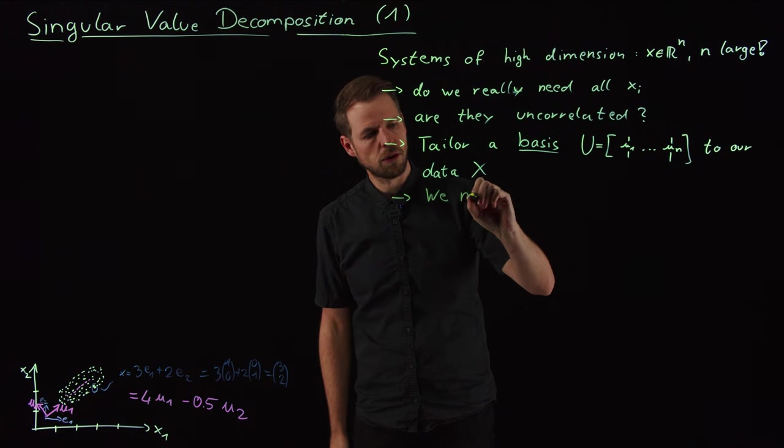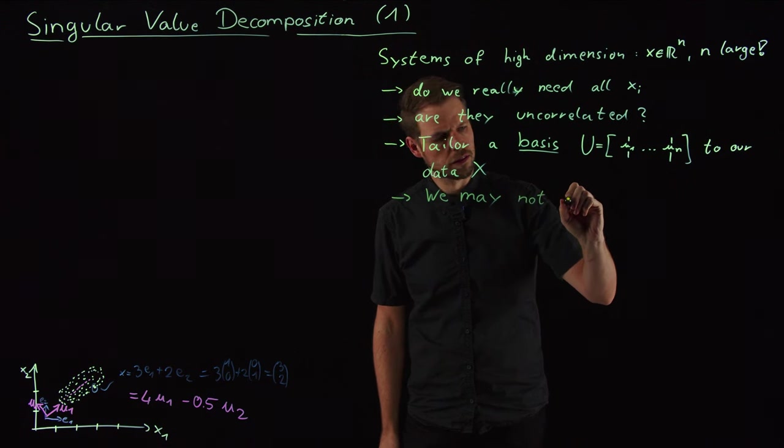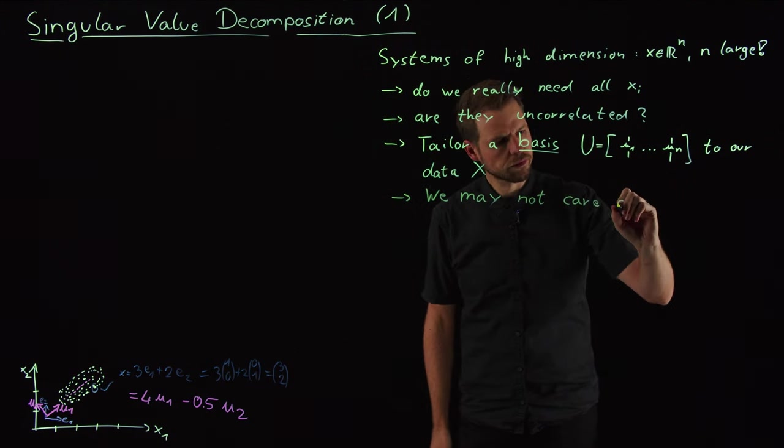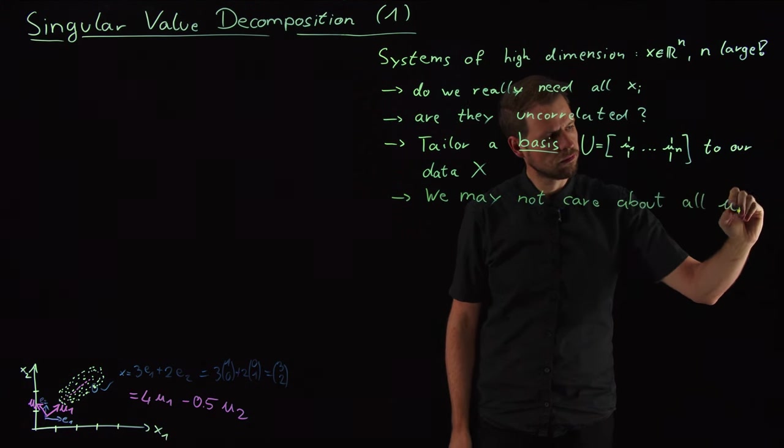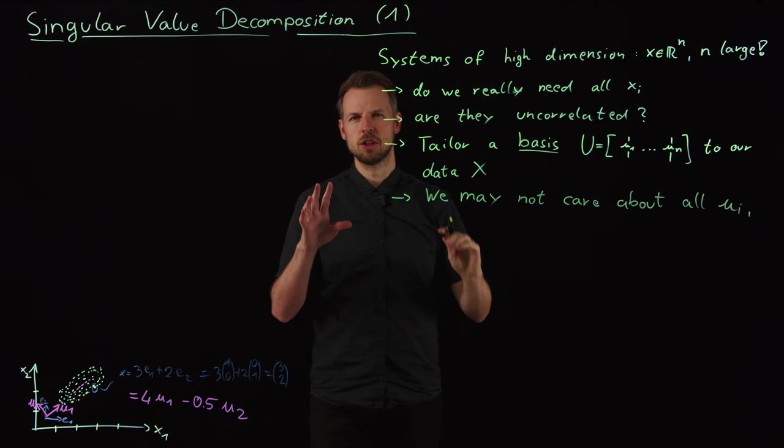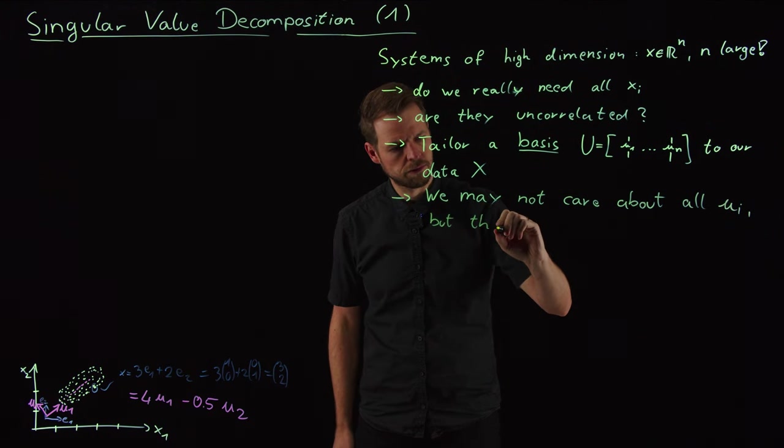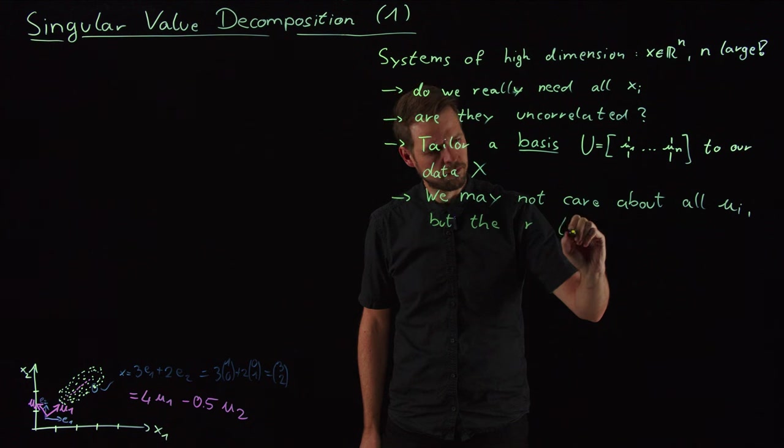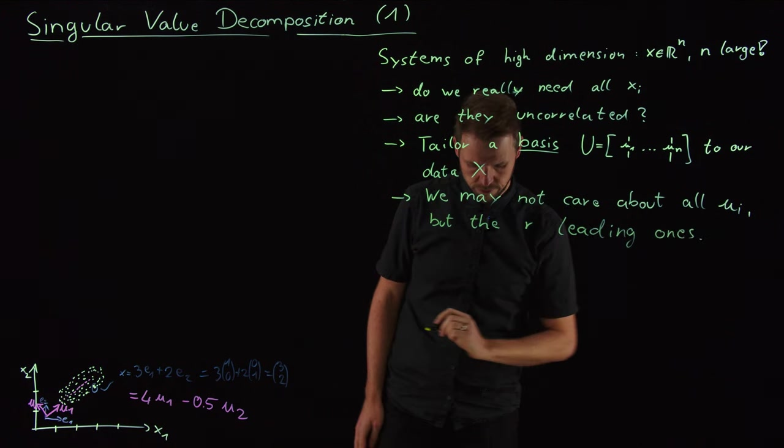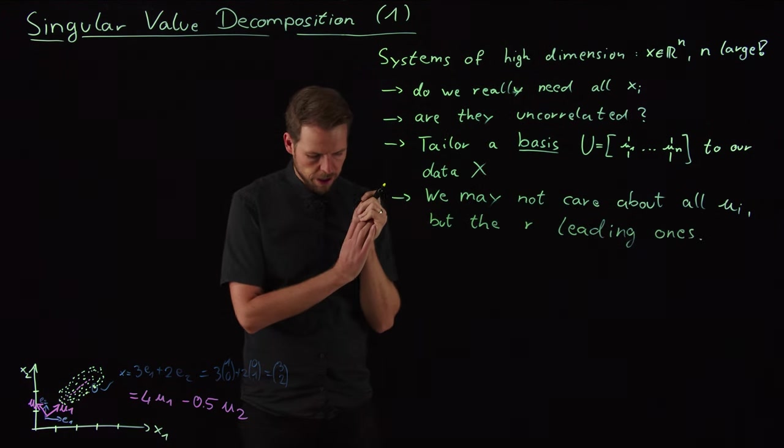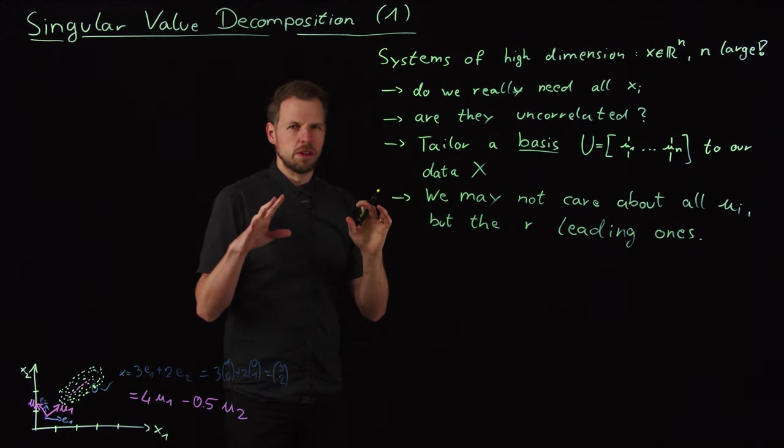So this is the next statement. We may not care about all vectors. So we don't care about all of them, but maybe just the r leading ones. So let's just fix a number r and say, okay, we want to get only r of these vectors.